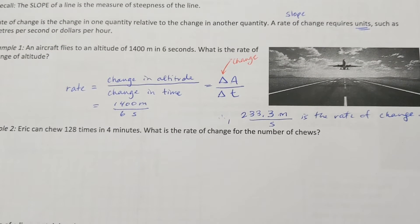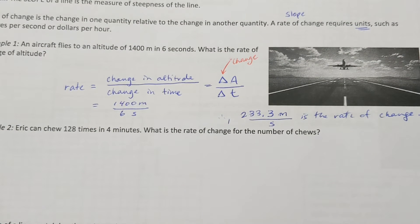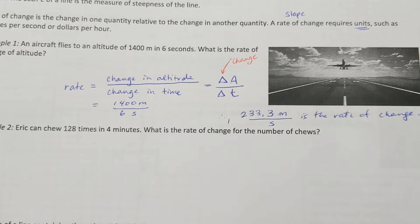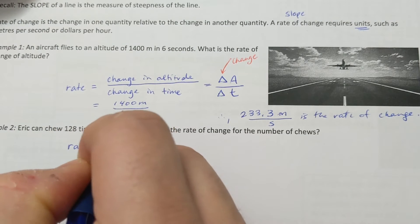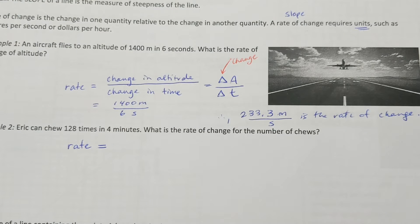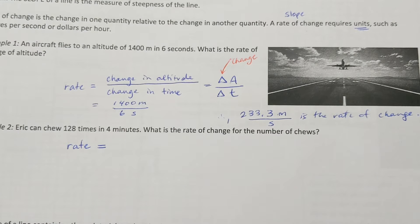Let's take a look at example two. Eric can chew 128 times in four minutes. What is the rate of change for the number of chews? We want to find how much Eric can chew per minute — a change in something over a change in time.